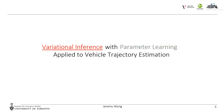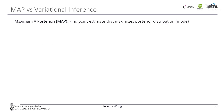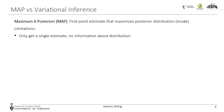Before going into variational inference, I want to talk about one popular technique for batch state estimation in robotics: maximum a posteriori estimation, or MAP. This approach finds the most likely state given the prior and the data, or in other words, it finds the mode of the posterior distribution. The limitation is that we lose important information about the distribution, which is a key aspect if we wish to fuse the state estimate in a probabilistic framework, or judge how confident we are in our state estimate.